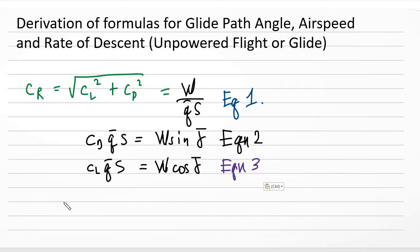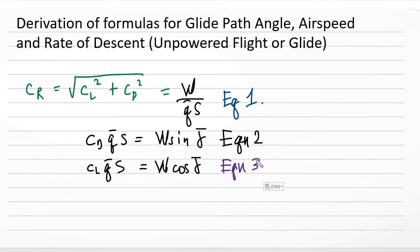We are now in the last part of our discussion for unpowered flight or glide. For this last part, we will derive formulas for glide path angle, airspeed, and rate of descent. In the previous video, we simplified three equations.